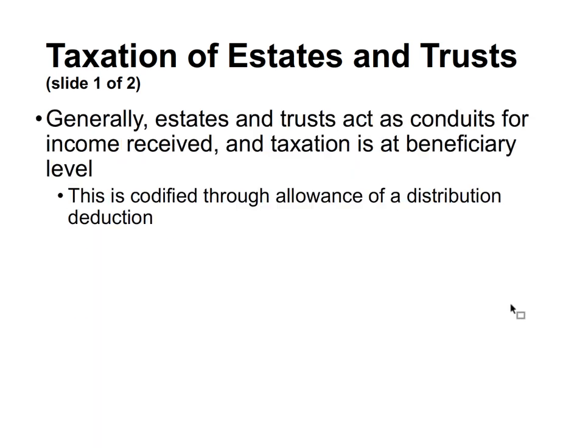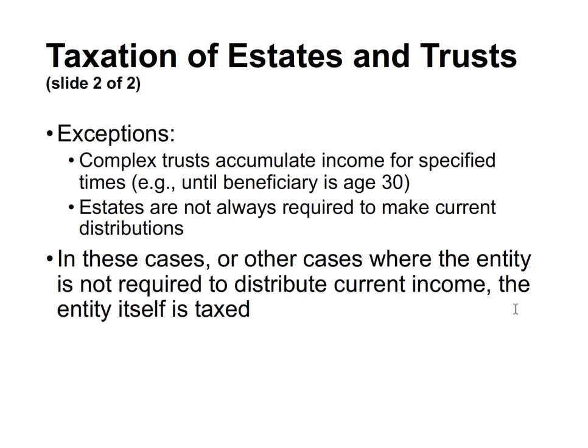There are exceptions to the general conduit rule — specifically a complex trust, which accumulates income for a specified time, and estates that are not always required to make current distributions. In these cases where the entity is not required to distribute current income, the entity itself is taxed rather than simply flowing through to the parties.